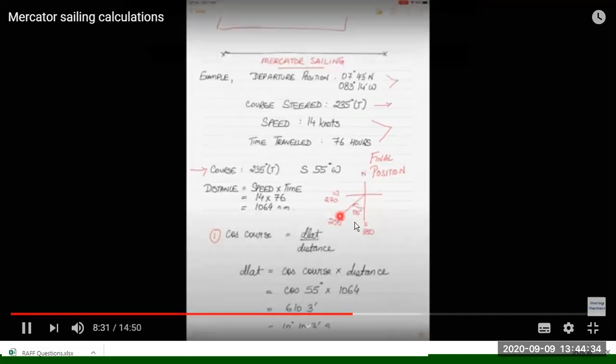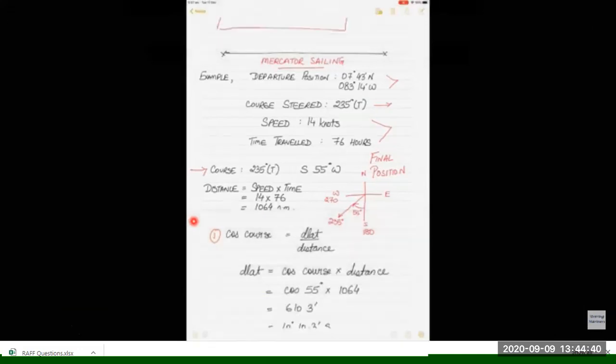So this is south 55 degrees west. Then we have to find the distance for the triangle. Distance equals speed into time. Speed is 14 knots times 76 hours, so 1064 nautical miles.